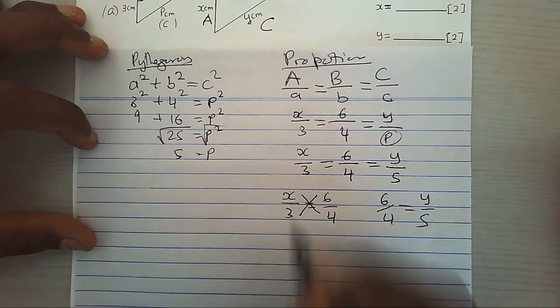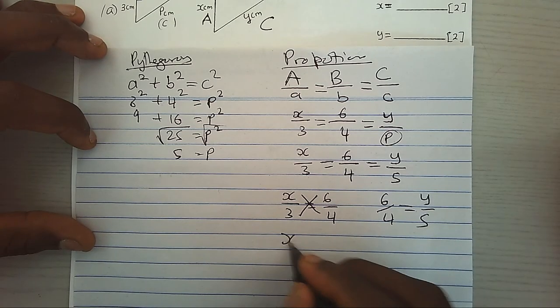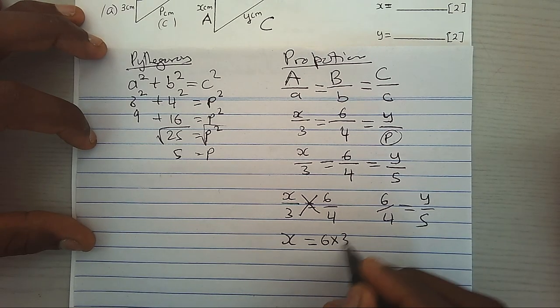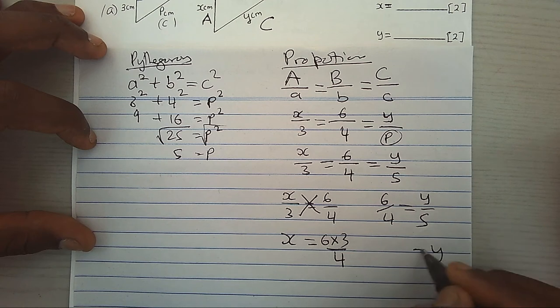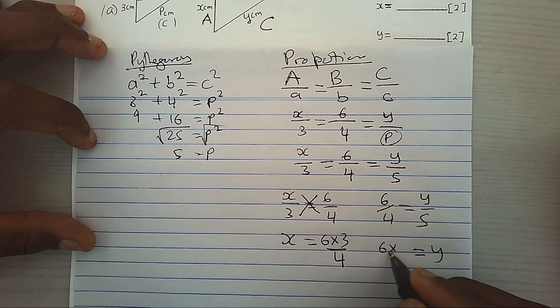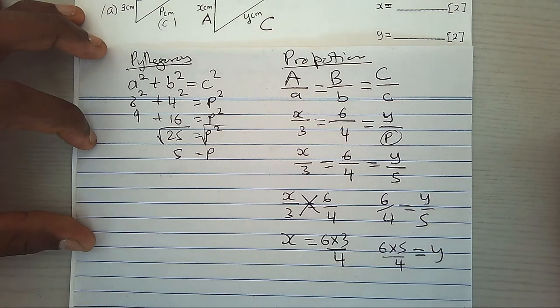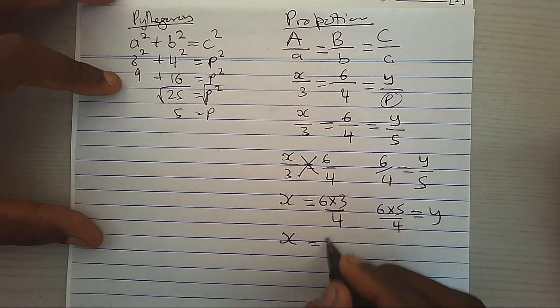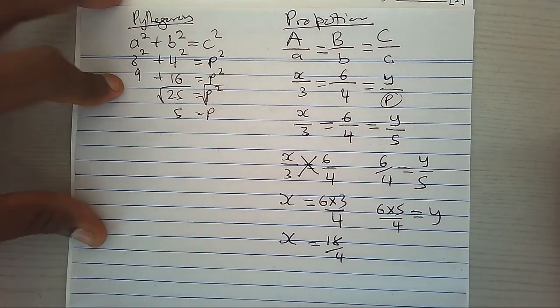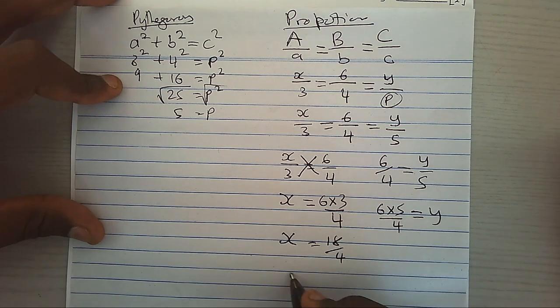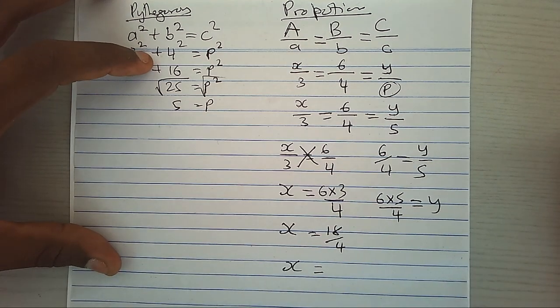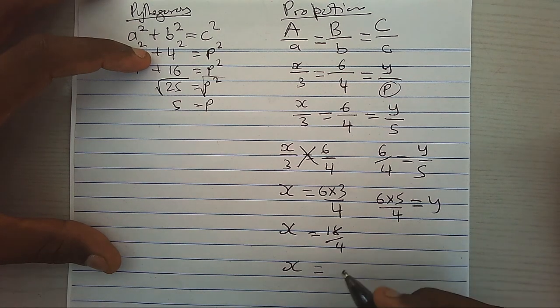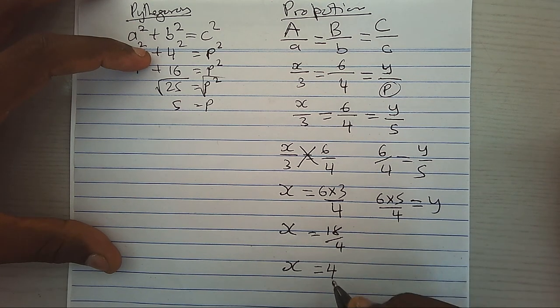Cross multiply. X will be 6 times 3 over 4. Y will be 6 times 5 over 4. Giving us 18 over 4. Hence, X is 18 over 4. We shall get 4 and 2 over 4.